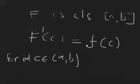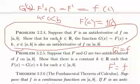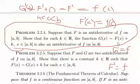Now look at this problem: show that for each real number k, the function G defined as G = F + k is also an antiderivative of lowercase f. We know F is an antiderivative of f, which means F is continuous. If you add a constant, you are shifting that function along the y-axis, so G is also continuous on the closed interval.